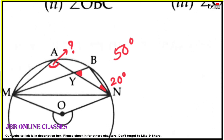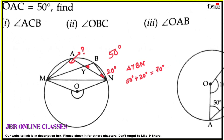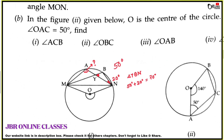In triangle YBN, we know two angles: 50 degrees and 20 degrees, giving a sum of 70 degrees. The third angle, YBN, equals 180 minus 70, which equals 110 degrees.